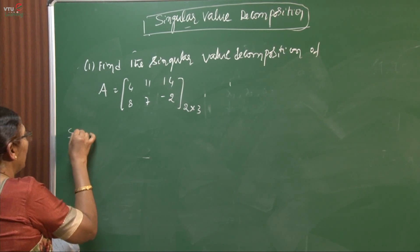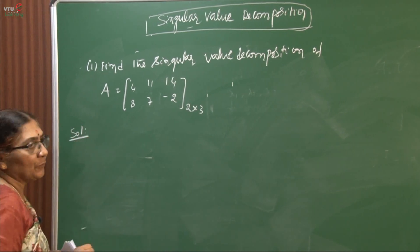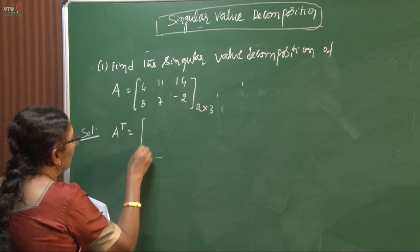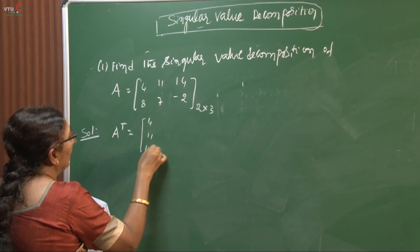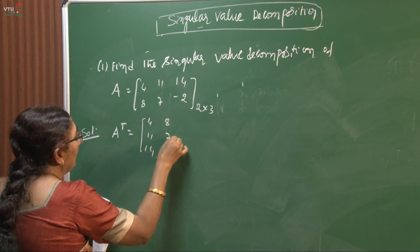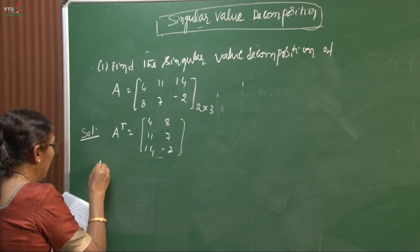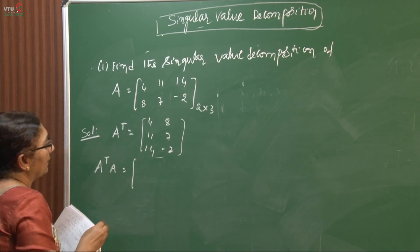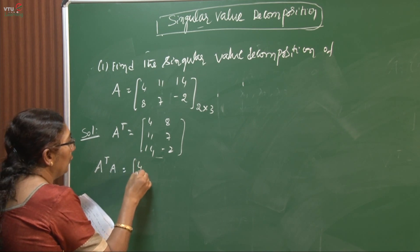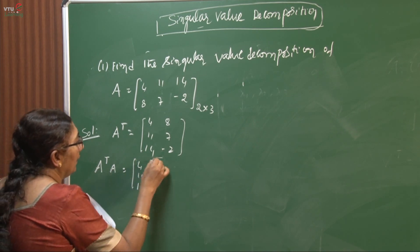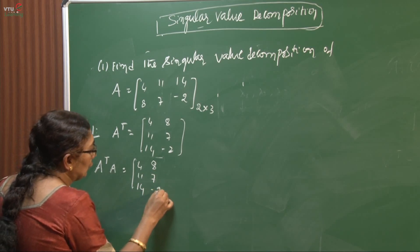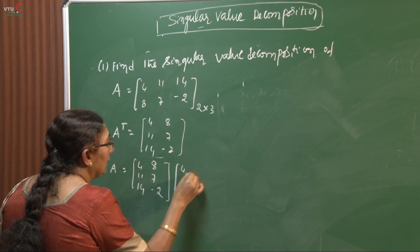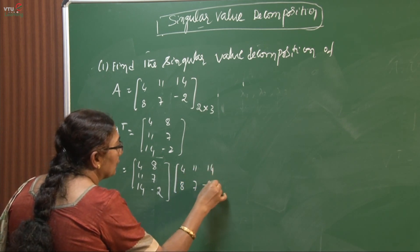Observe that the number of rows is 2 and the number of columns is 3 — it is a rectangular matrix. The first step is to find A transpose. A transpose is row-to-column: [4, 11, 14; 8, 7, -2]. In the next step, multiply A transpose times A to convert the given matrix into a square matrix.